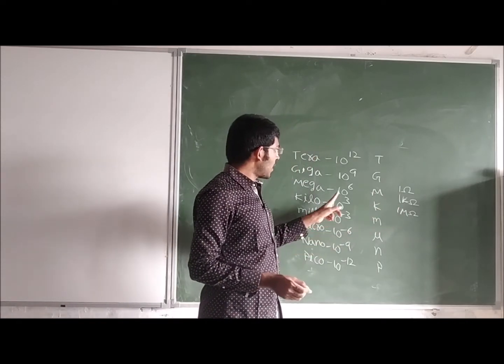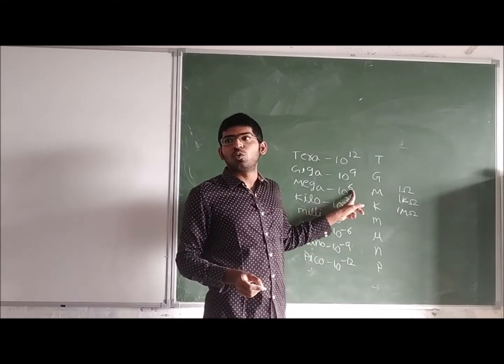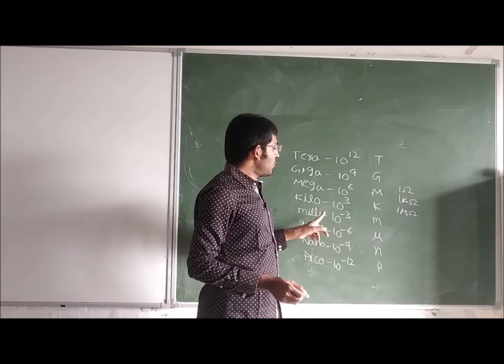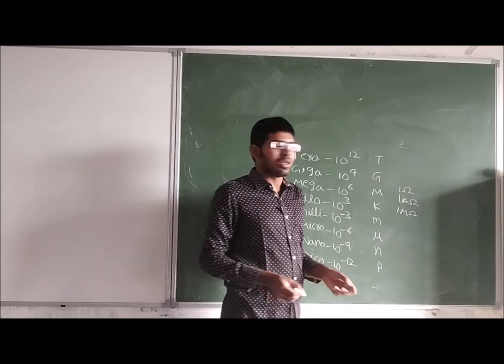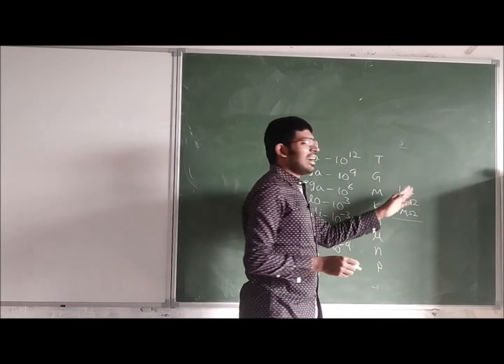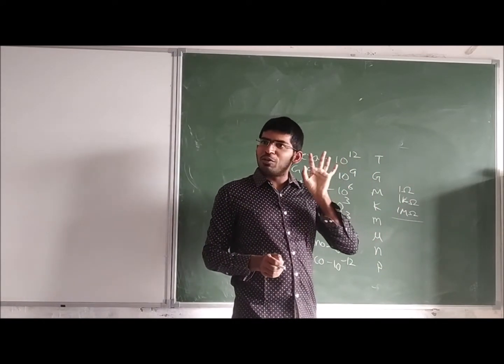1 mega ohm is equal to 10 to the power 6 ohms. Generally, we do not use milli ohms, micro ohms, nano ohms, or pico ohms. Up to mega ohms range only we will measure in the laboratory.